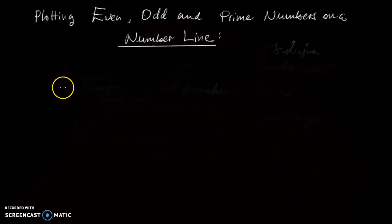Okay, welcome. In this tutorial we are going to plot even numbers, odd numbers, and prime numbers on a number line. So a number line is like this - this is your number line, and in this case we want to plot even numbers.